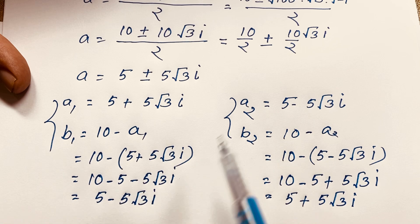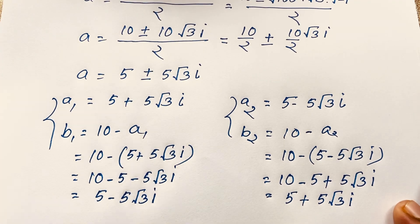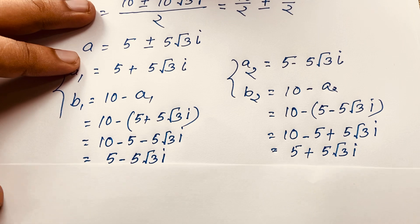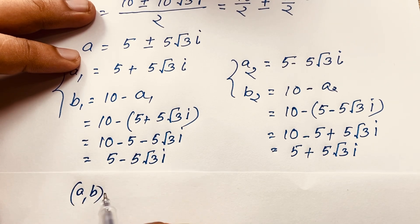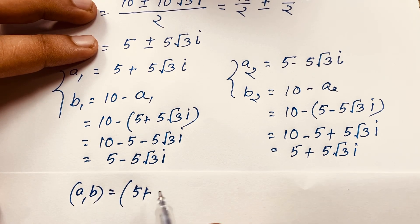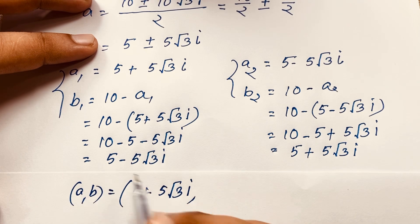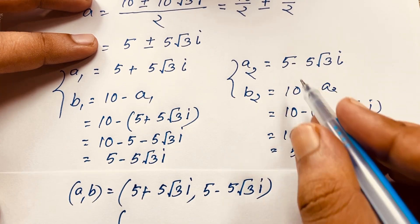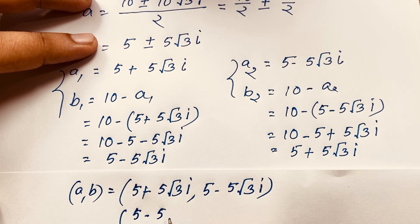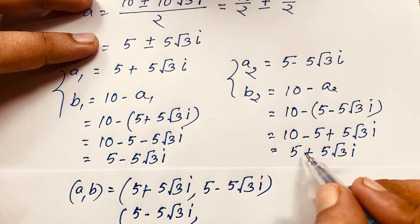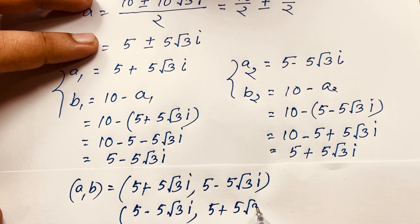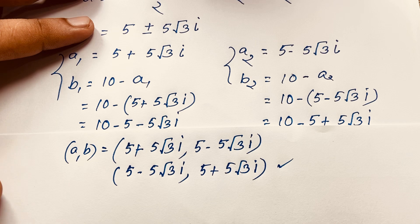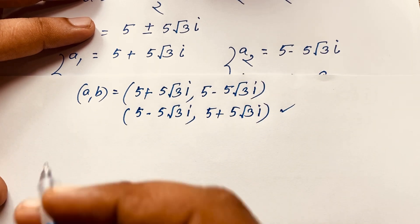So our final answer: when a equals 5 plus 5√3 i, then b equals 5 minus 5√3 i; and when a equals 5 minus 5√3 i, then b equals 5 plus 5√3 i. Both are complex solutions — there is no real solution to this Math Olympiad question.